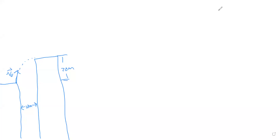For this next example, we're going to look at two buildings with a person standing on the edge of one building who's throwing a ball to the person standing at the edge of another building. We're going to assume the height of the people is negligible. The two buildings are 10 meters apart — we call this building one and building two — and the difference in height between the two buildings is 20 meters. We're going to define our coordinate system and write down what we know and what we don't know.